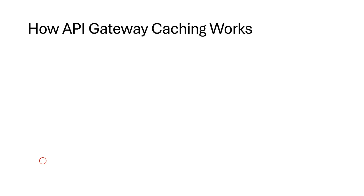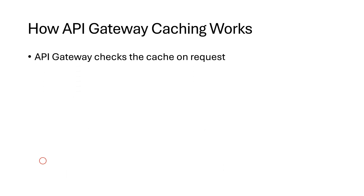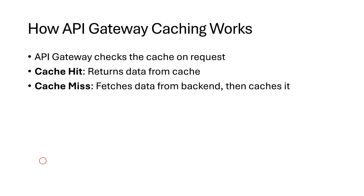Now let's see how the internals of API Gateway caching work. When a client makes a request, API Gateway first checks the cache. If the requested data is found in the cache, that is called a cache hit — it's returned immediately without querying the backend. If the data isn't in the cache, that is called a cache miss — then API Gateway forwards the request to the backend.